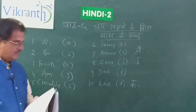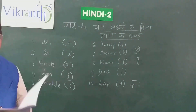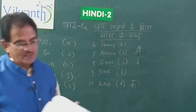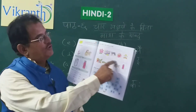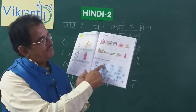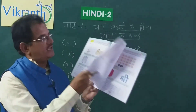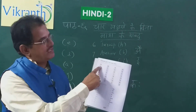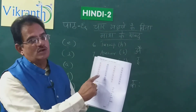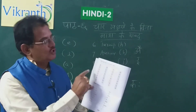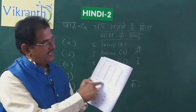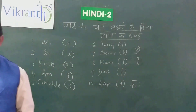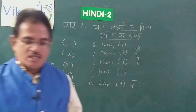OK children, with that we come to the end of Lesson 6. Don't forget to write the words looking at the pictures, then fill in the boxes with appropriate letters, then in the next page write the words beginning with the given letters, and then complete the match the following exercise. Thank you, children.